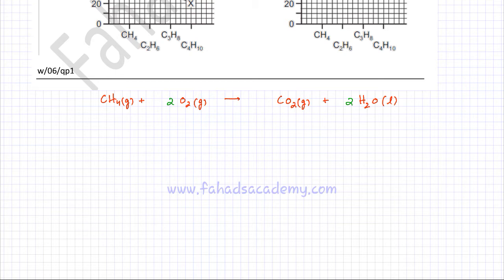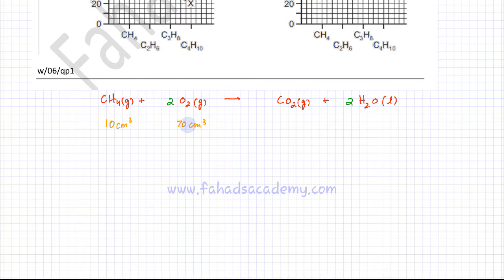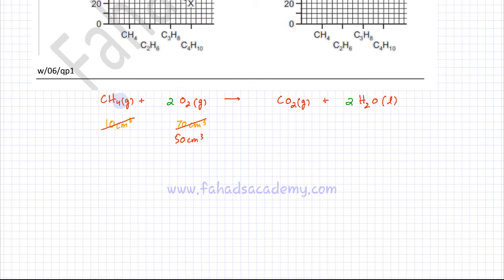We have 10 cm³ of methane reacting with 70 cm³ of O2. For gases, the mole ratio and volume ratio are exactly the same. One mole of methane reacts with two moles of O2, so 10 cm³ reacts with 20 cm³. This means 50 cm³ of oxygen would be left behind.